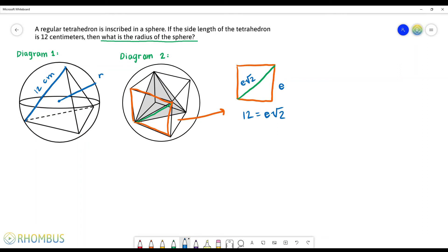Now that we have an equation, we can figure out what E is and figure out the edge value of our cube. So if we solve this equation, we get that E is equal to 6√2. Now like I mentioned earlier, using our edge value, we can figure out our sphere's radius.